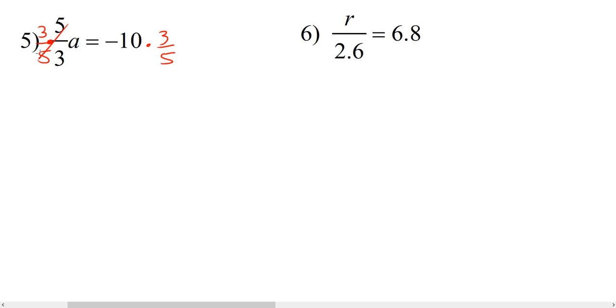On the left, these cancel out, leaving us with a. And on the right, we can cross simplify here. 10 and 5 can be divided by 5. 5 divided by 5 is 1, and 10 divided by 5 is 2. So we end up with negative 2 times 3, and that is negative 6.